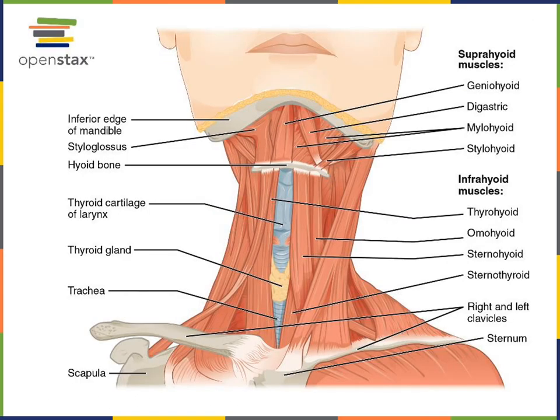Here with an anterior view zoomed in on the muscles involved in positioning the hyoid bone and the larynx. The larynx, or voice box, is positioned along with the hyoid bone by muscles that insert onto the hyoid bone. The suprahyoid muscles are muscles located superior to the hyoid bone and have the action of elevating the hyoid bone and larynx. This includes the geniohyoid, digastric, mylohyoid, and stylohyoid.